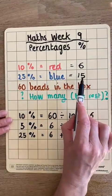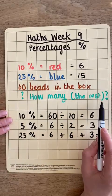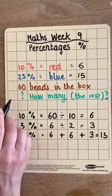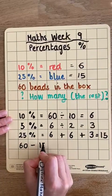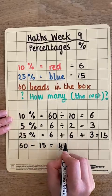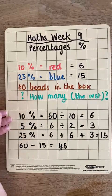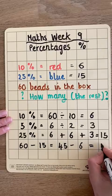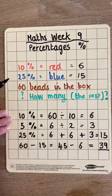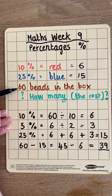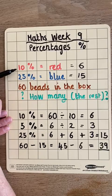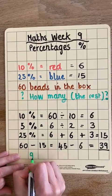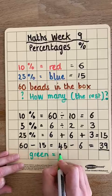So out of the 60 beads, 15 are blue, 6 are red, and the rest are green. Let's now find out how many green there are. We know there are 60 beads in total, so let's take off the blue beads: 60 take away 15 leaves us with 45. Now take away the red beads: 45 take away 6 is 39. So if we take away the blue and red beads from the total of 60, what's left is our green beads — and that total is 39.